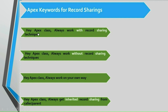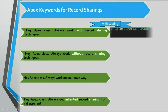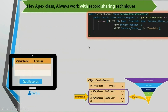In order to instruct the Apex class to always work with record sharing techniques, we have a keyword called with sharing. To use this keyword, we simply append with sharing in front of the class. From that point on, all the SOQL queries written inside this class will run with sharing techniques applied — that is, all SOQL queries in this class will run in user mode.